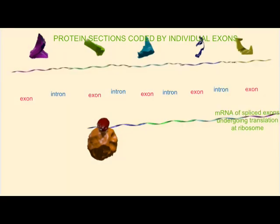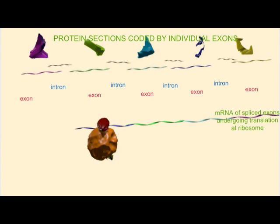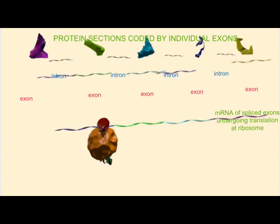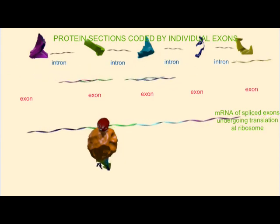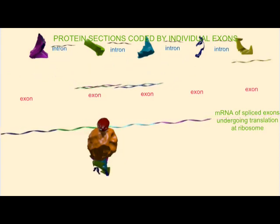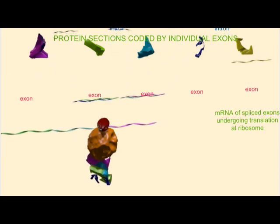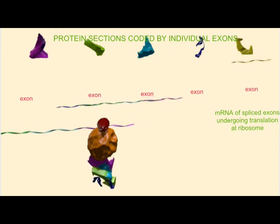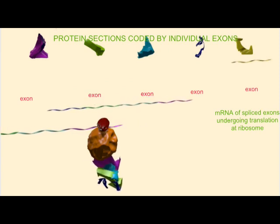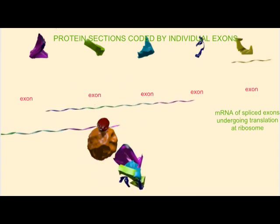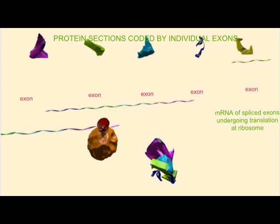This was one of the reasons that early estimates of the human genome overestimated the number of genes. It was not appreciated the degree to which alternate splicing of exons can produce multiple protein products from the same gene.